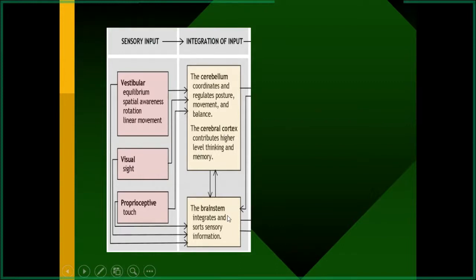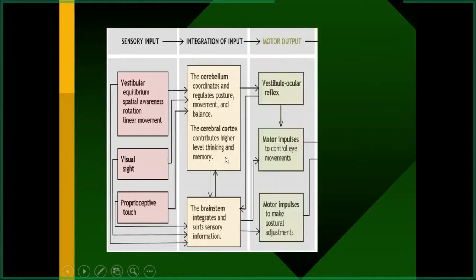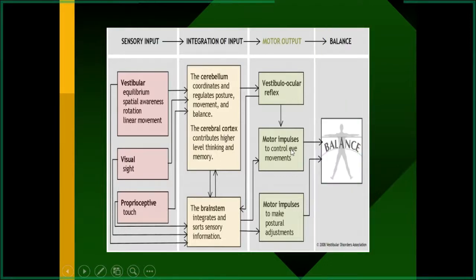After integrating all this information, the brainstem takes certain decisions, which are passed in the form of the vestibulo-ocular reflex. This reflex generates nystagmus and helps in fixing the gaze. Motor impulses also control eye movements when we move our head, trying to keep the image of an object on the retina, and they help in maintaining posture.